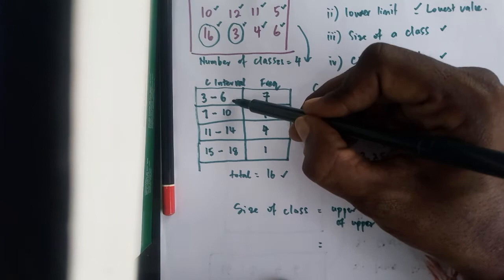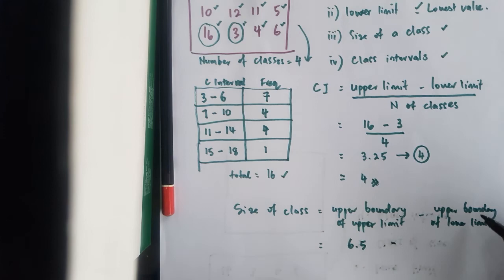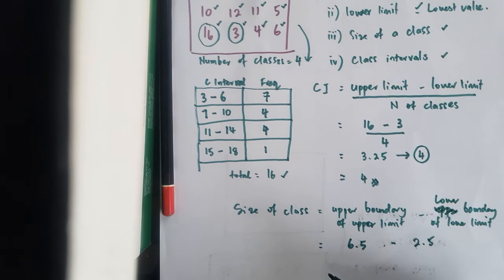So in this case upper boundary for 3 to 6 is 6.5 minus lower boundary, sorry lower boundary here would be 2.5 and your answer 4 will be your size of class.